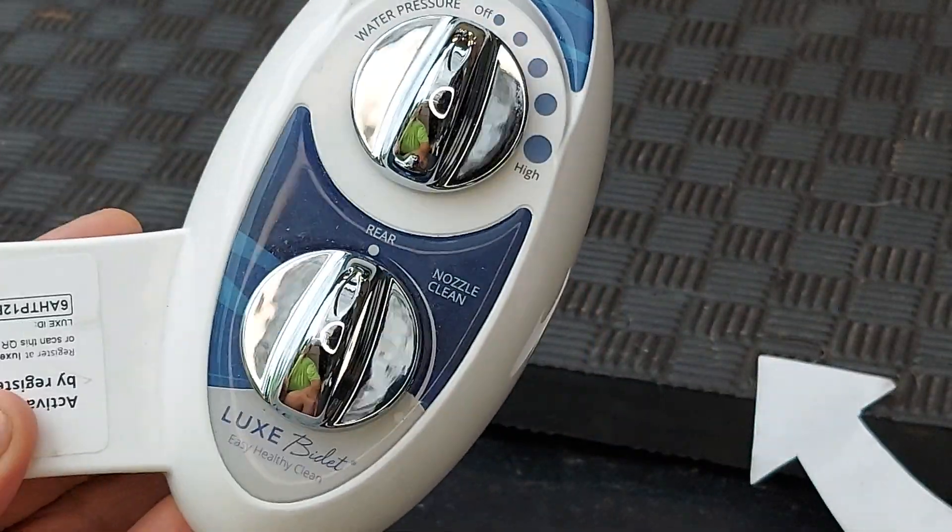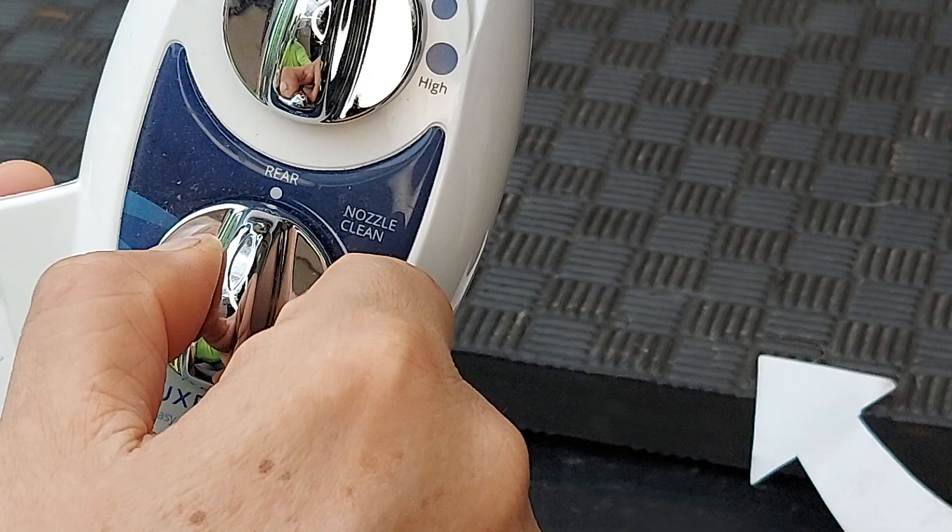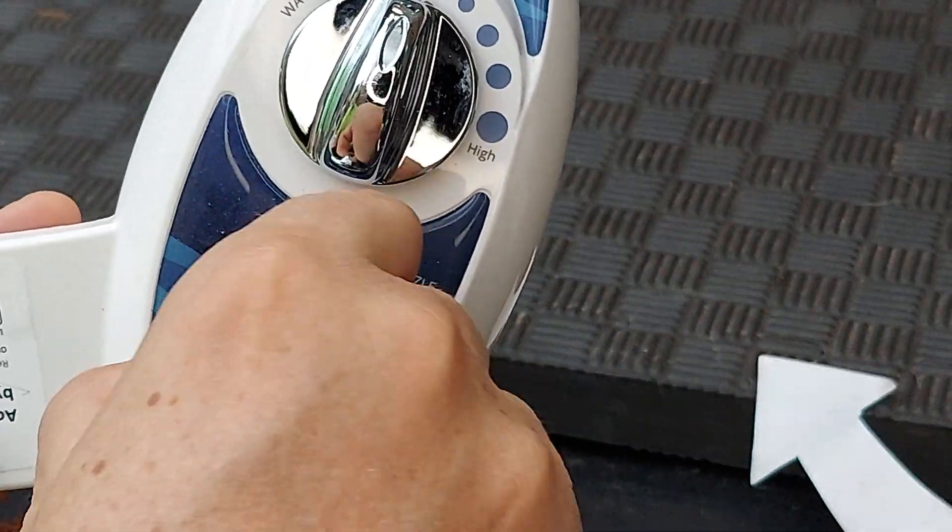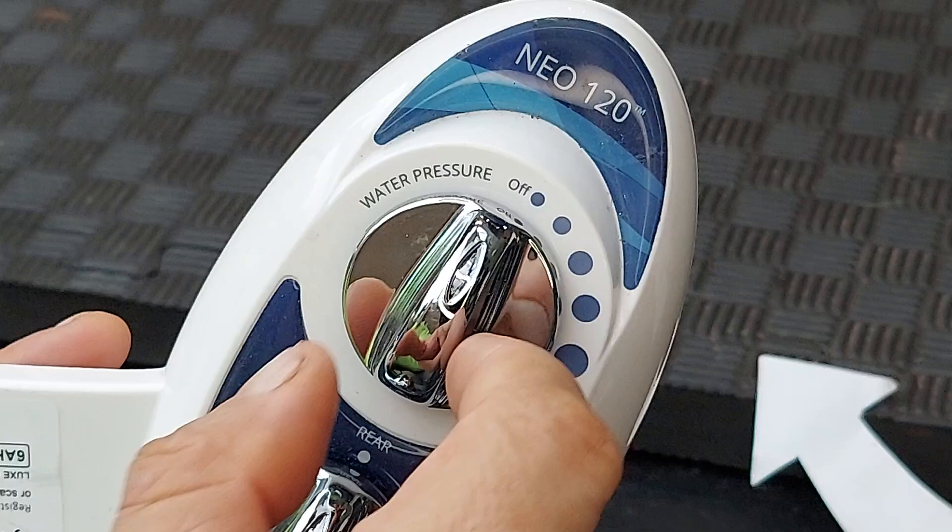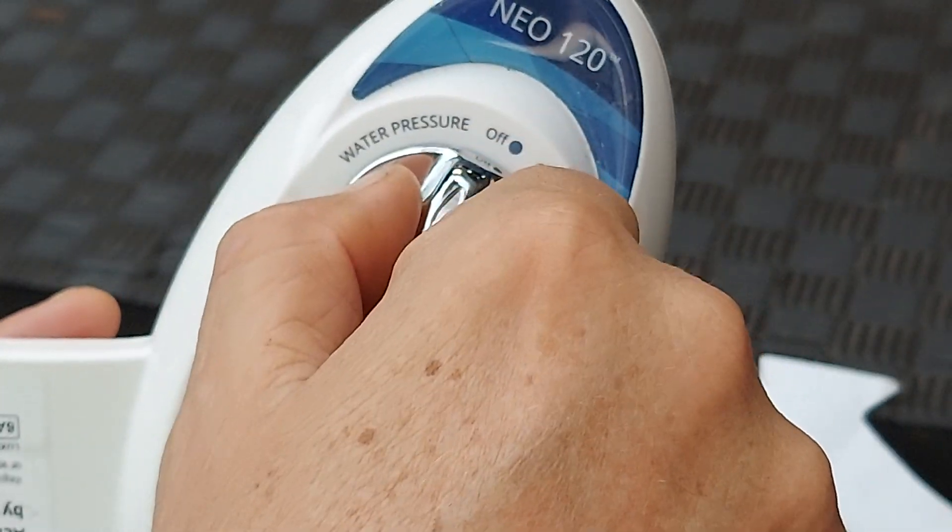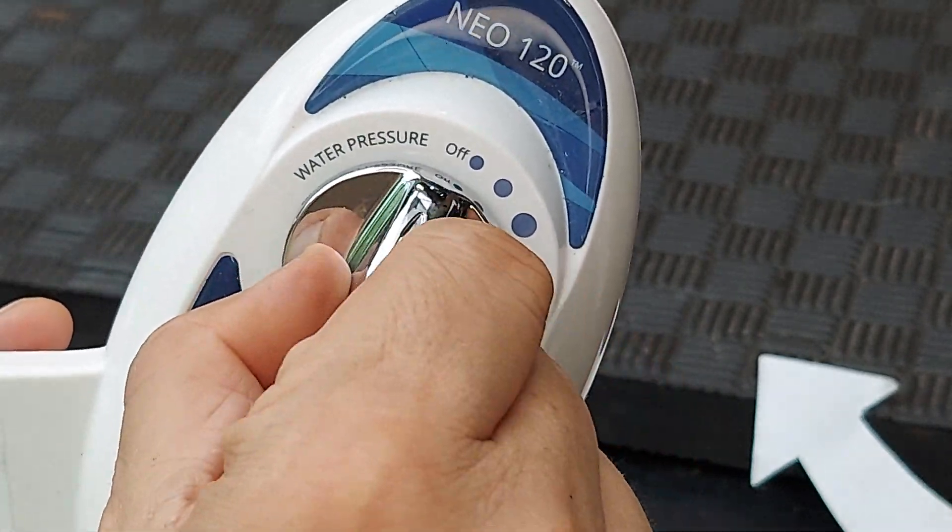Just taking a close-up look at the controls. The position here for rear, and then the other position are both clicks. And up top, where you essentially turn it on, you'll allow pressure to go through the bidet. It's on, off, and then it'll increasingly go up to high. And this has no clicks.